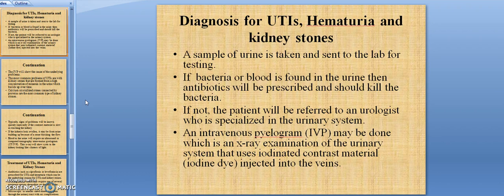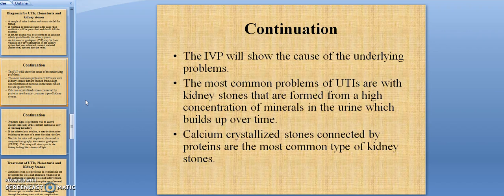A sample of urine is taken and sent to the lab for testing. If bacteria or blood is found in the urine, then antibiotics will be prescribed and should kill the bacteria. If the antibiotics do not work, then the patient will be referred to a urologist who specializes in the urinary system. An intravenous pyelogram, or IVP, may be done, which is an X-ray examination of the urinary system that uses iodinated contrast material, or iodine dye, that is injected into the veins. The IVP will show the cause of the underlying problems. The most common problems are kidney stones that are formed from a high concentration of minerals in the urine which builds up over time.